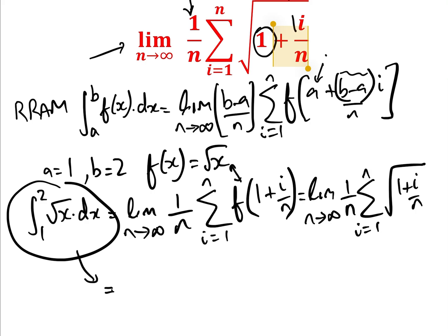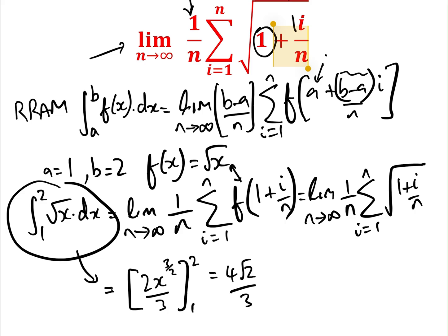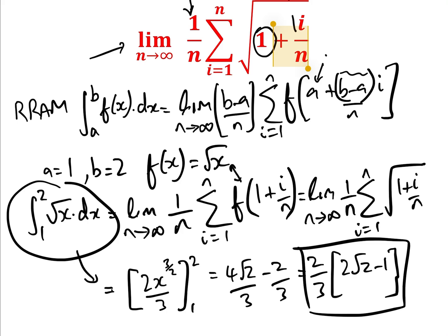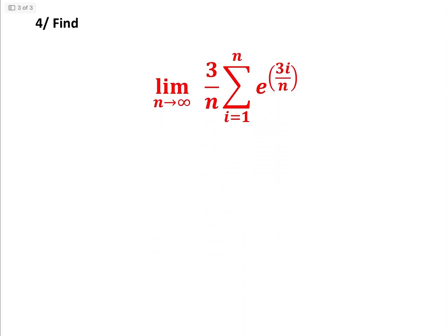Evaluating: the integral of √x is 2x^(3/2)/3, evaluated between 1 and 2, which gives 4√2/3 minus 2/3, which equals (2/3)(2√2 minus 1). That is the answer to that limit.